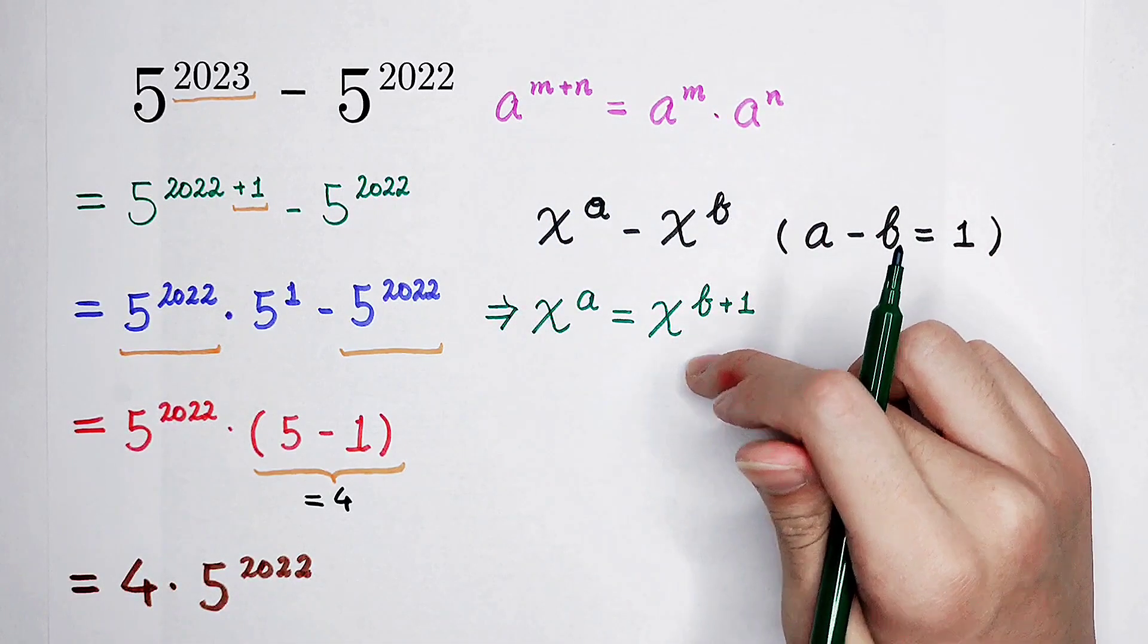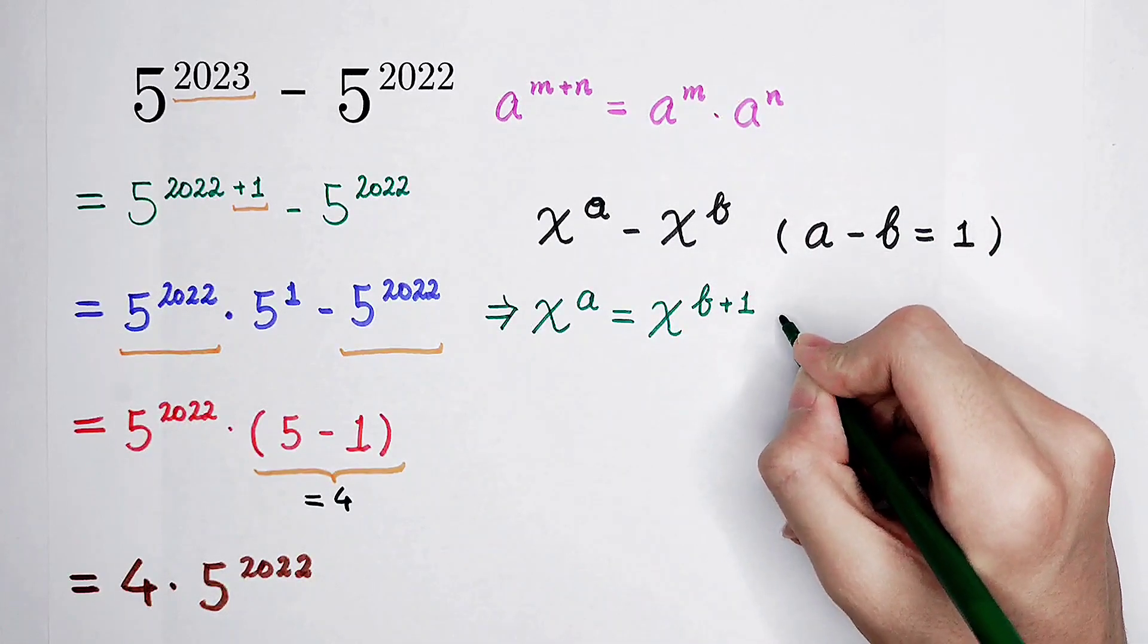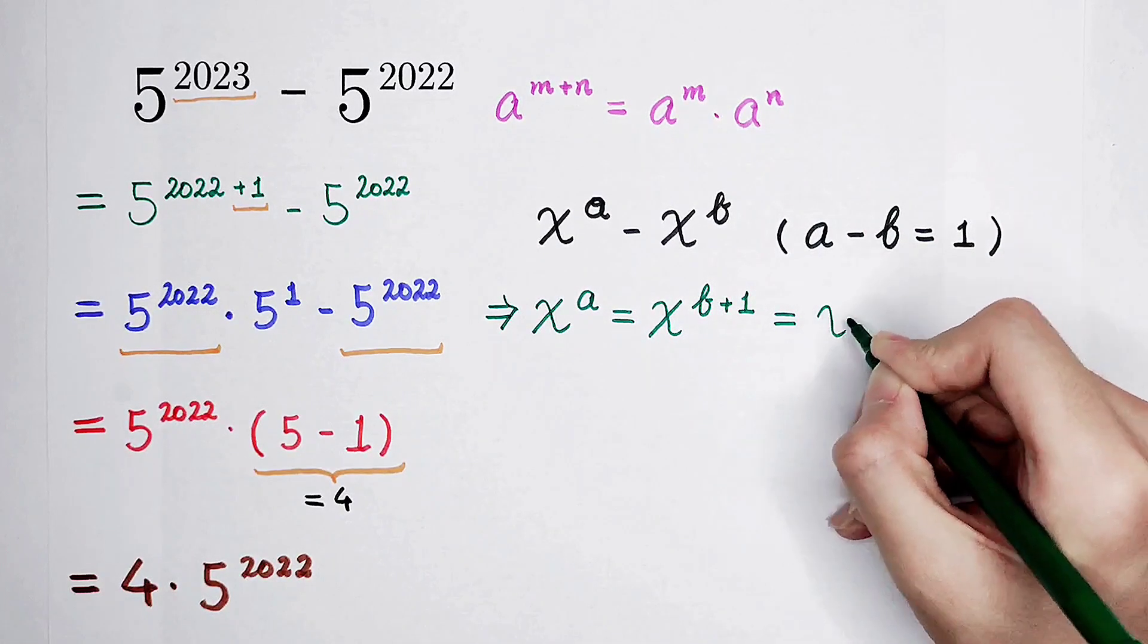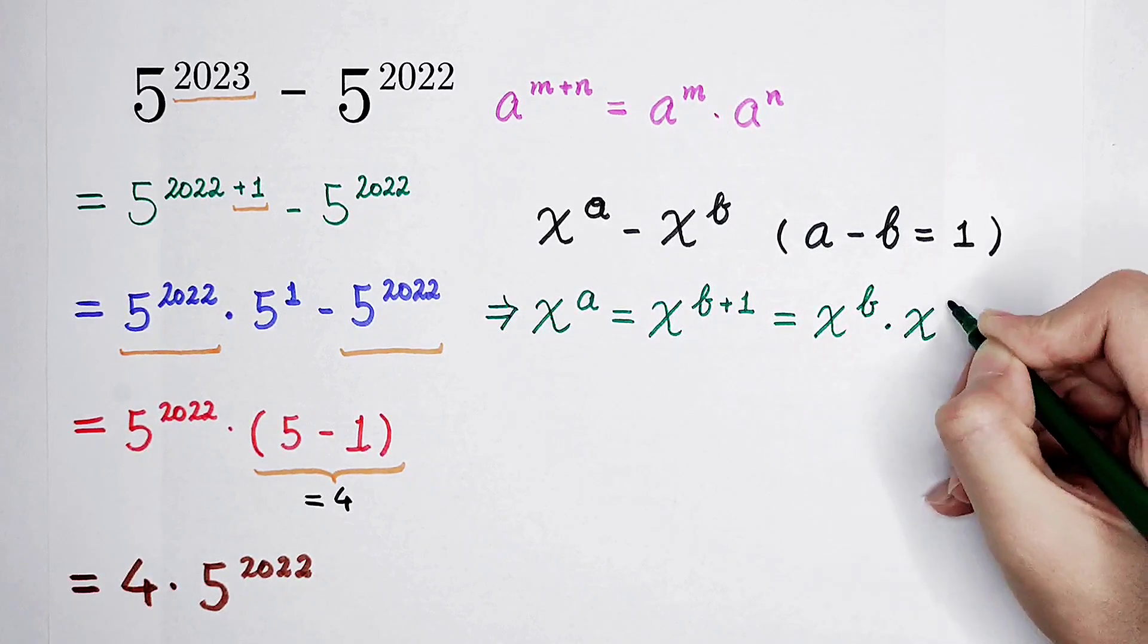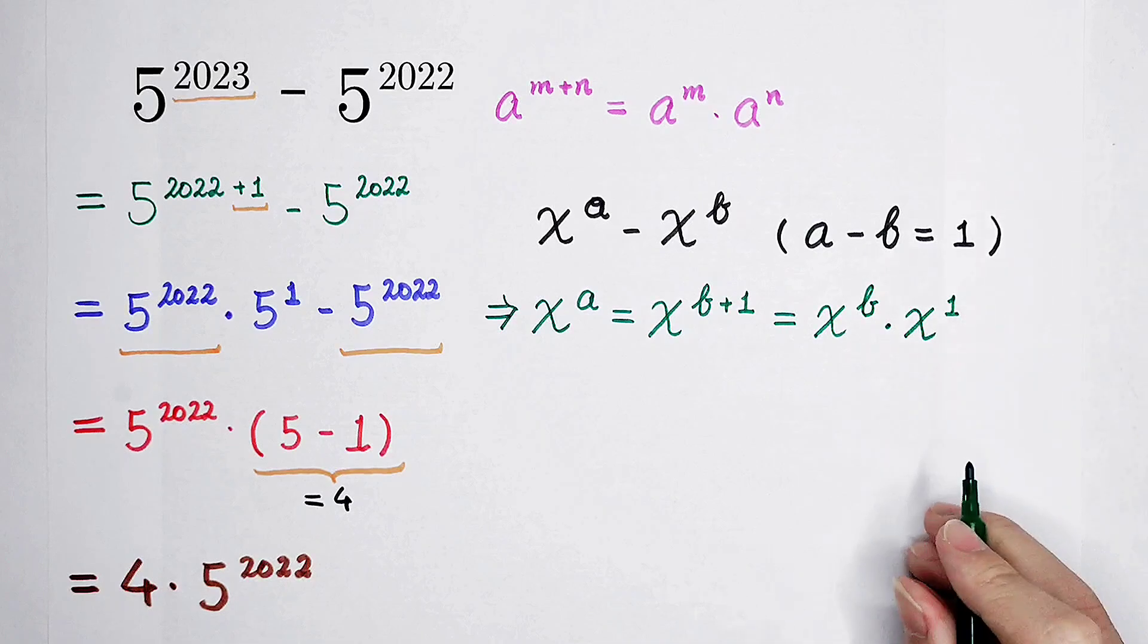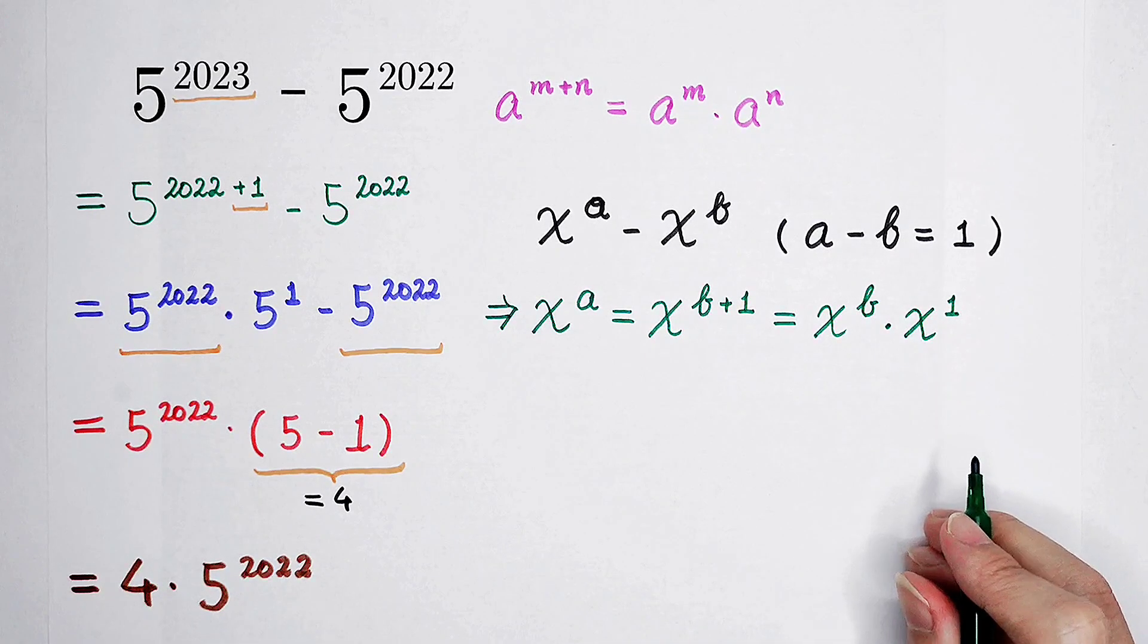So x to the power of b plus 1 is equal to x to the power of b, and then times x to the power of 1. We know that any number to the power of 1 is equal to itself.